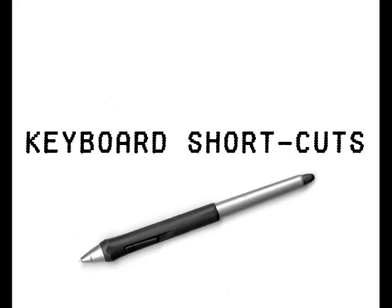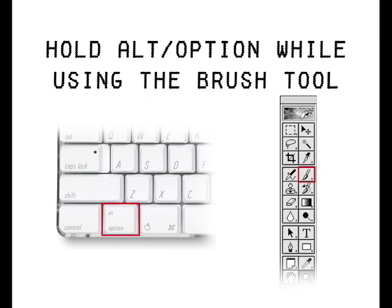Hey everybody. I'm going to show you one of my favorite keyboard shortcuts. It really saves a lot of time when you're coloring, and basically what it is is holding down the Alt or Option key while you have your brush tool selected.